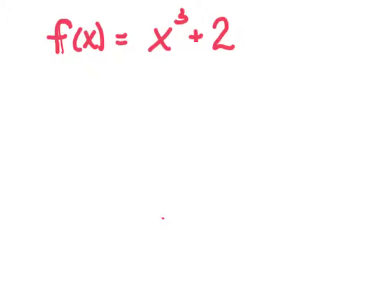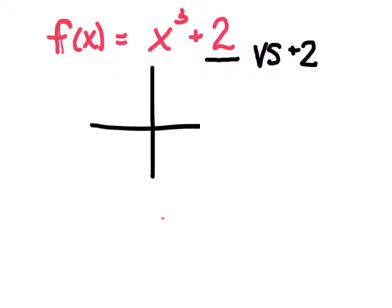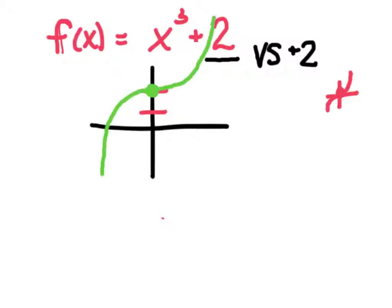So I've given you the function f of x equals x cubed plus 2. Take note where that 2 is sitting — it's outside, not wrapped in parentheses. So this is a vertical shift up 2. The main focus point of x cubed is zero, zero, so I take that point and shift it up 2. Recall that you're concave down on the left and concave up on the right — concave down looks like a frown, concave up looks like a cup.